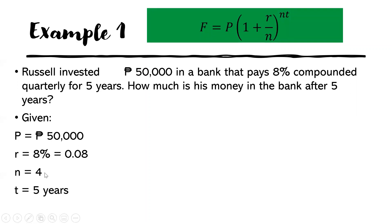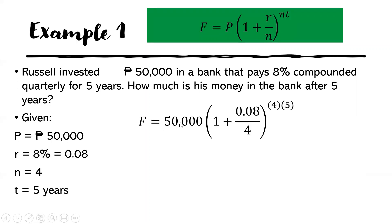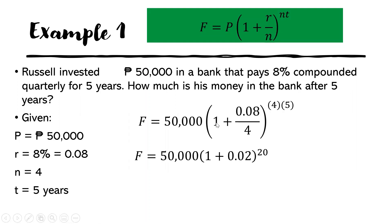Now let us substitute the given into the formula. We have F equal to 50,000 times (1 plus 0.08 over 4) raised to 4 times 5. Following PEMDAS, we perform the operation inside the parentheses first. So we have 50,000, then 1 plus 0.08 divided by 4 equals 0.02, and 4 times 5 equals 20.